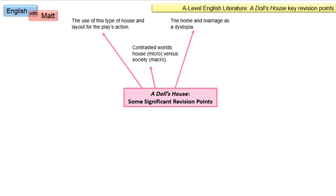This play was published in 1875, placing it within the Victorian era. You can also call it a naturalist prose drama. It's naturalist because the characters are designed to mimic real human speech, and the stage directions are quite lengthy. It's written in prose, not verse — not in pentameter like Shakespeare. So if you wanted to give it a more technical label, you could call it a naturalist prose drama from 1875.